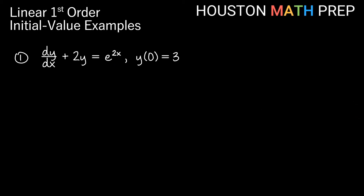Let's look at our first example: dy/dx plus 2y equals e to the 2x, and our condition is y of 0 equals 3. This says when x is 0, y is equal to 3, and we'll use that condition to solve for our constant and get our particular solution. You'll notice this is already in normal form, so we go ahead and find our integrating factor first, like we would solving the general solution.